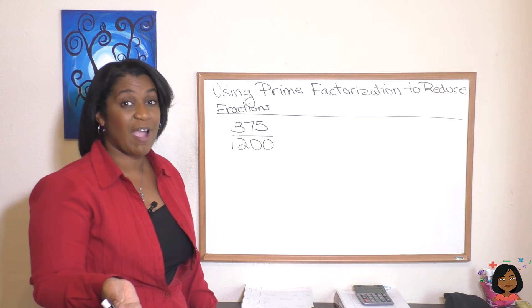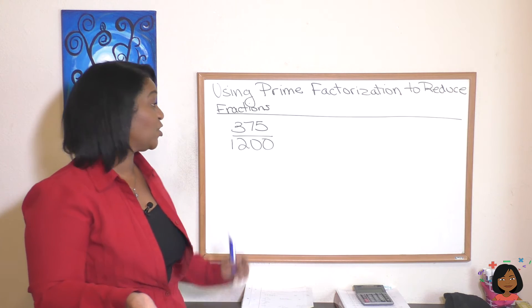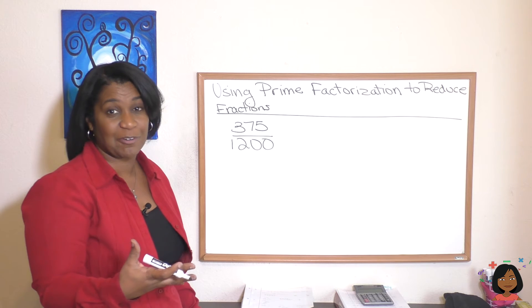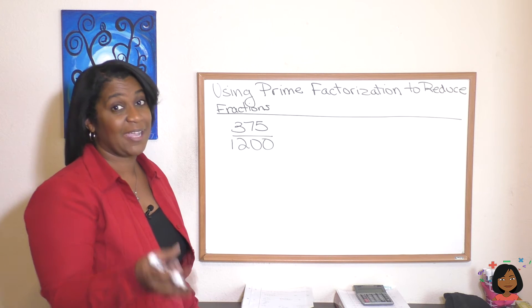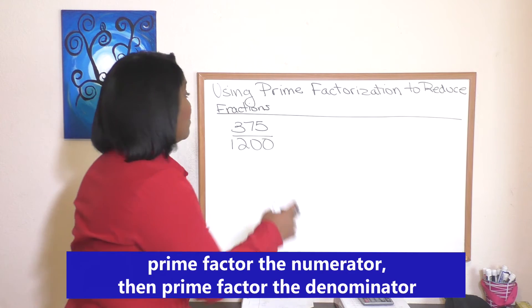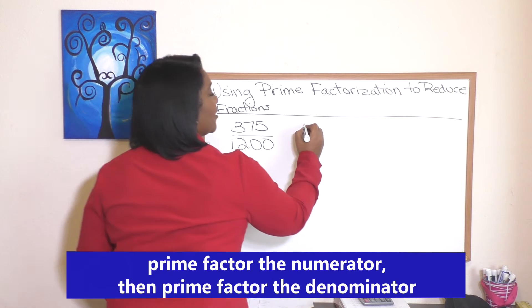Let's try prime factorization with this fraction — much bigger numbers. Let's do the top, then the bottom. 375.